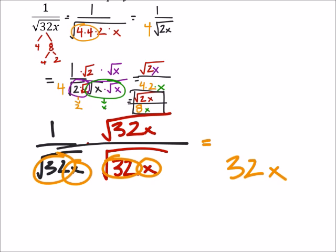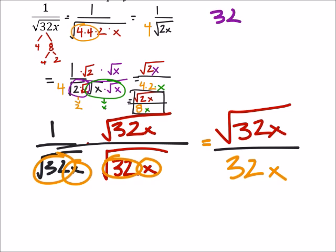In the numerator I've got that square root of 32x, which I would just then be looking to simplify. 32x - and 32 is going to split up into...